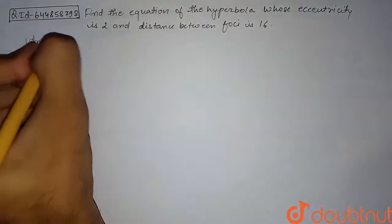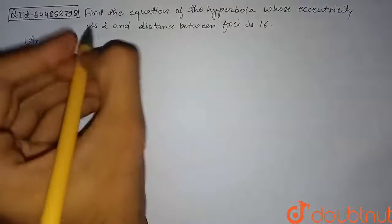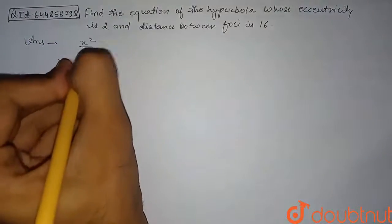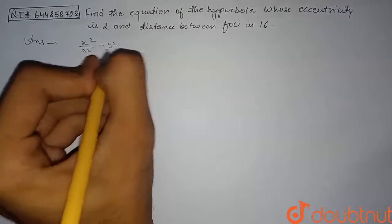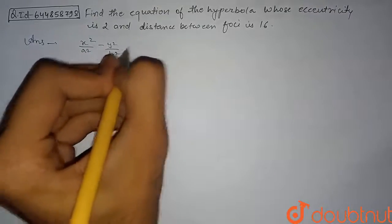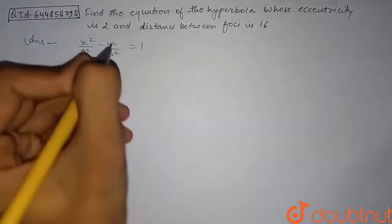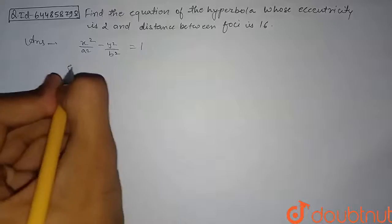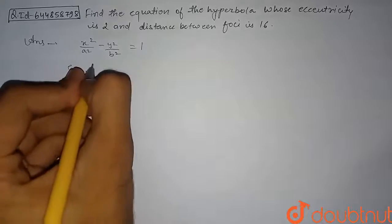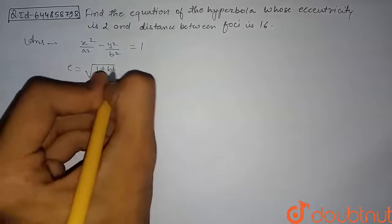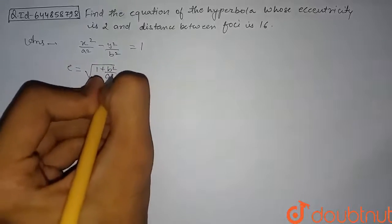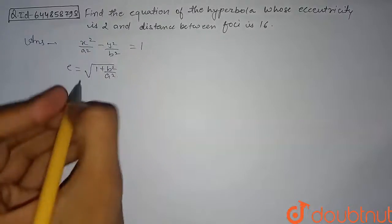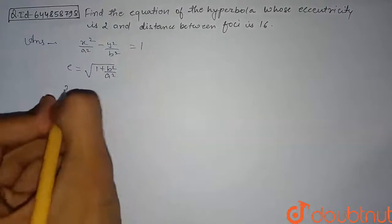First, we will assume our hyperbola to be x² / a² − y² / b² = 1. For this hyperbola, eccentricity is given by e = √(1 + b²/a²).